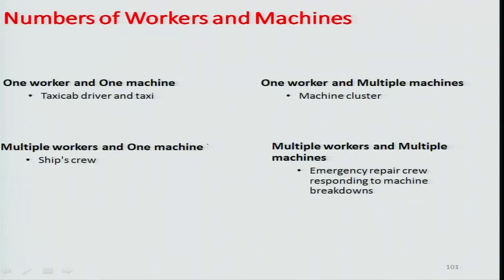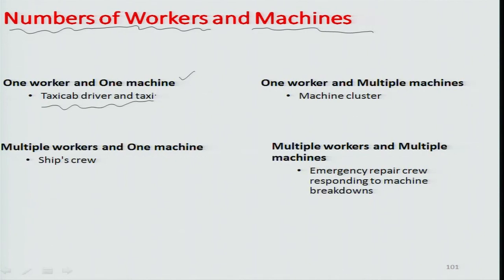There can also be differences in terms of the number of workers and machines associated with each other. For example, there can be a case of one worker and one machine — take a taxi cab driver and a taxi. The taxi is the machine and the taxi driver is the worker: exactly one person controlling one machine.